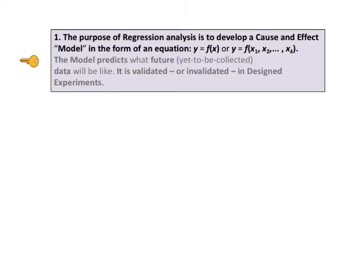The first part of key to understanding number one says the purpose of regression analysis is to develop a cause and effect model in the form of an equation y = f(x) or y = f(x1, x2, ..., xk). The x or the x's are the causes. The y is the effect. If the function f describes a line, then we have linear regression.